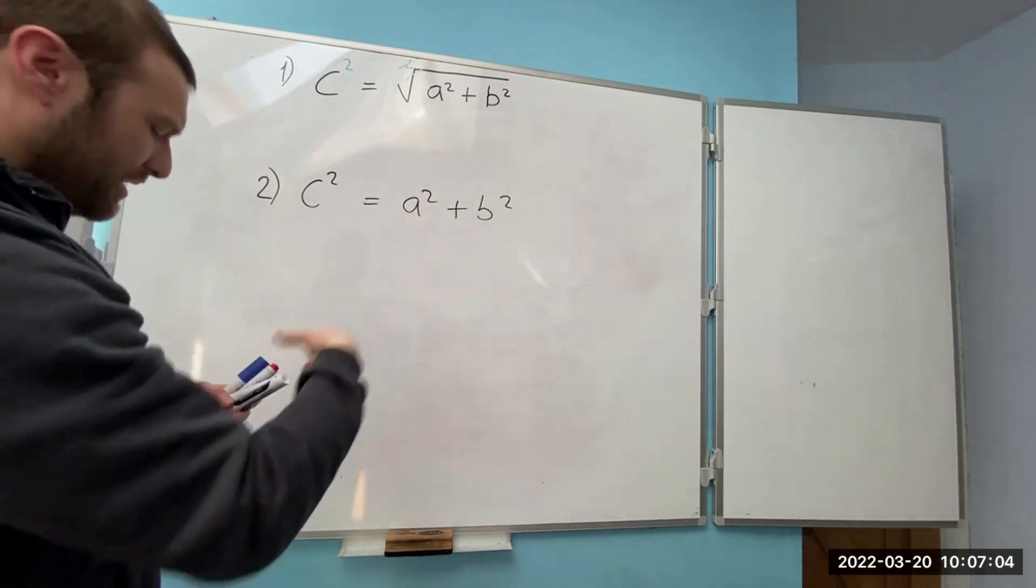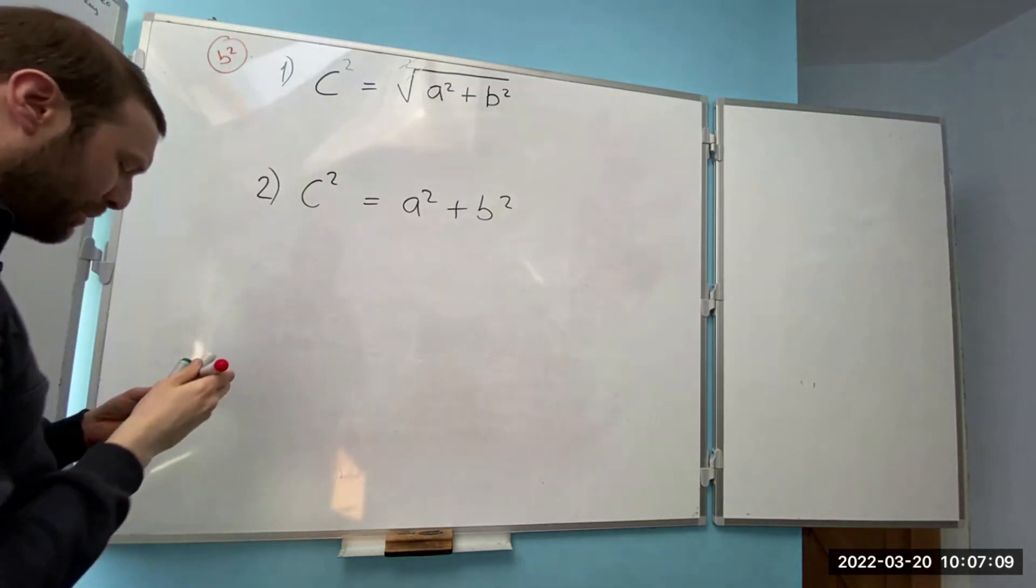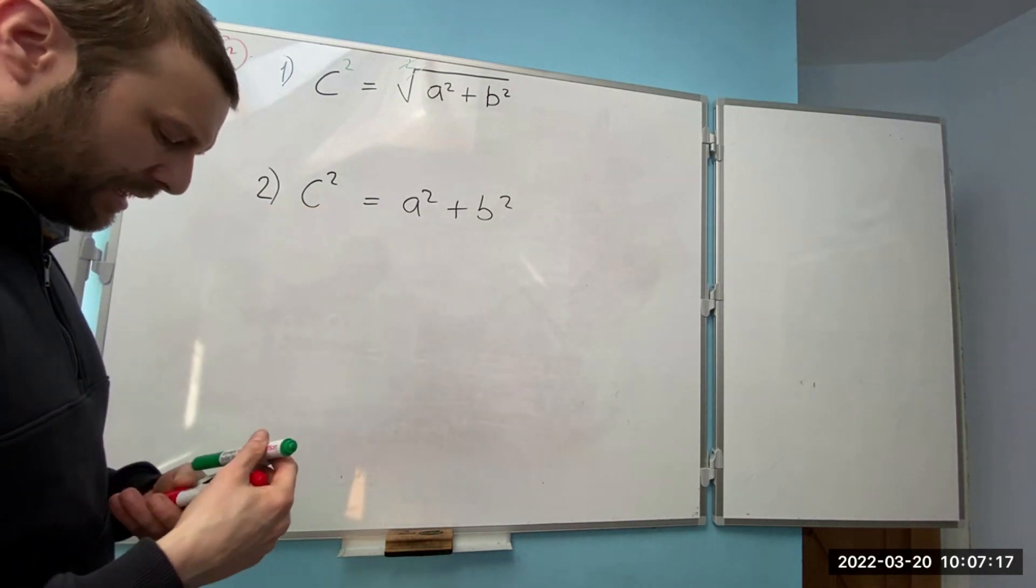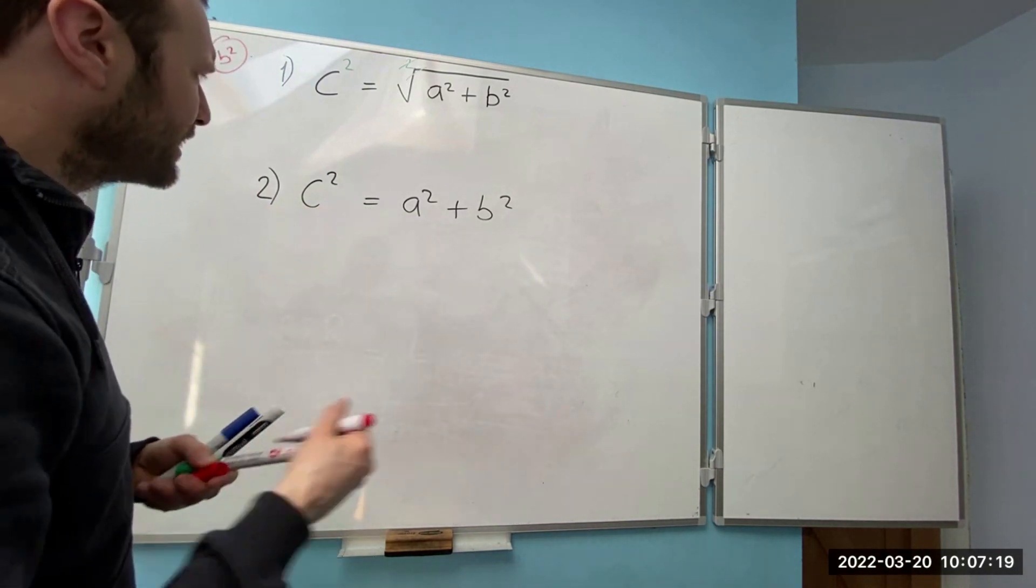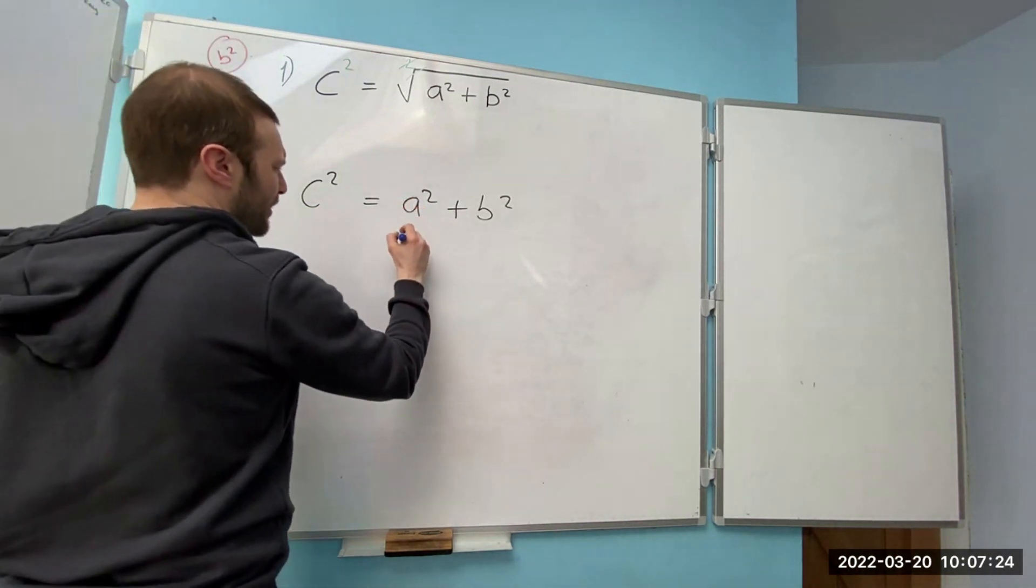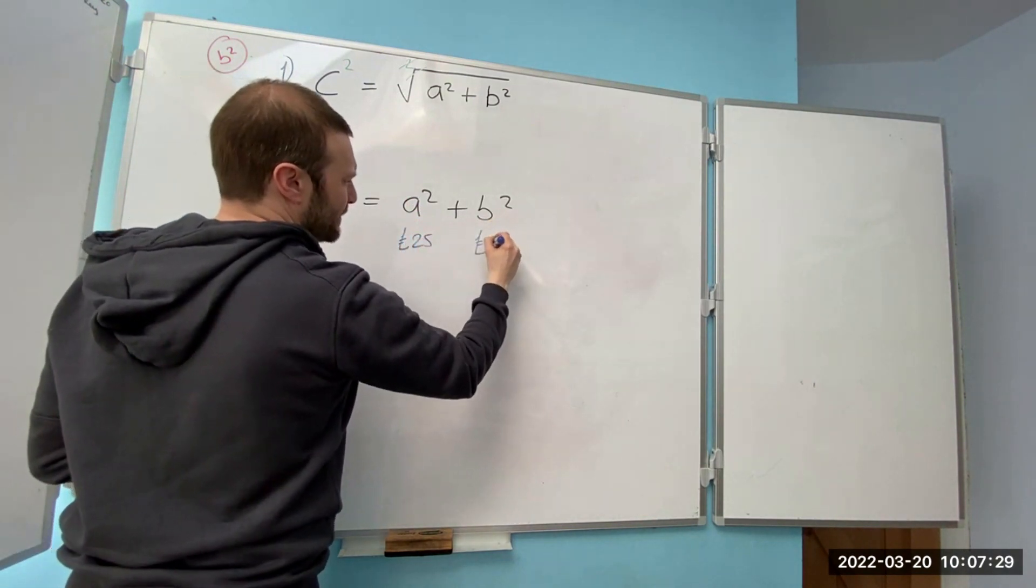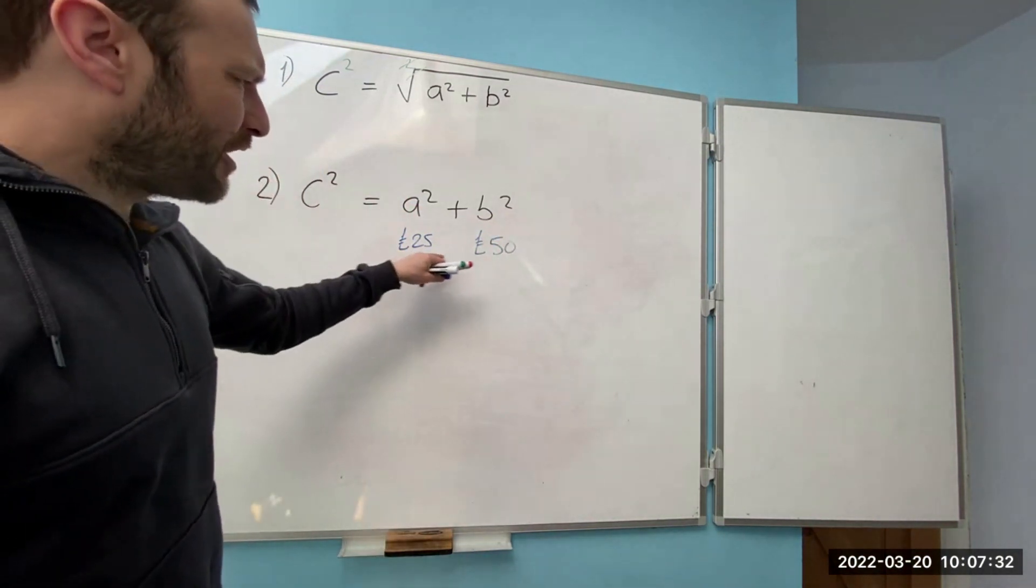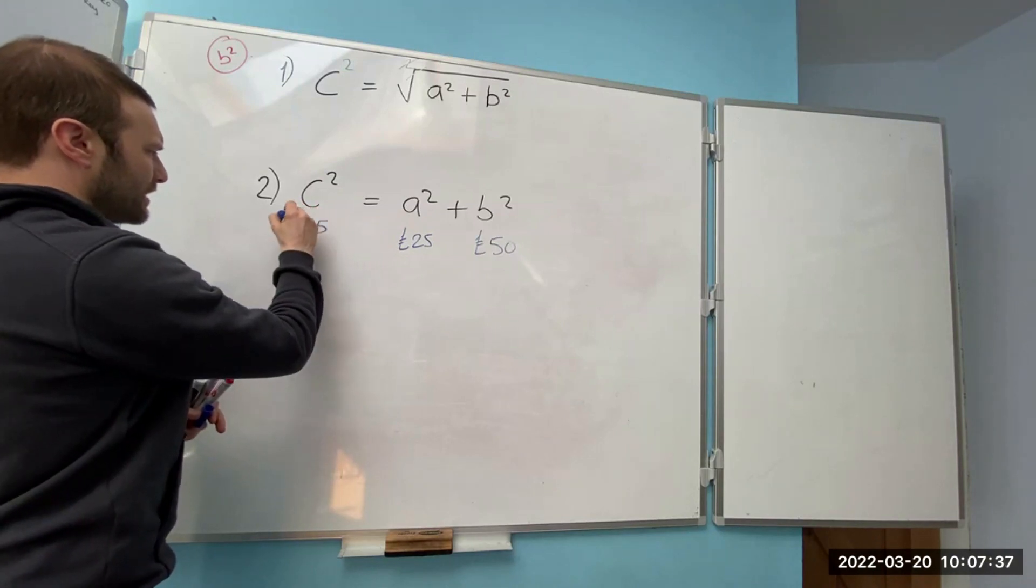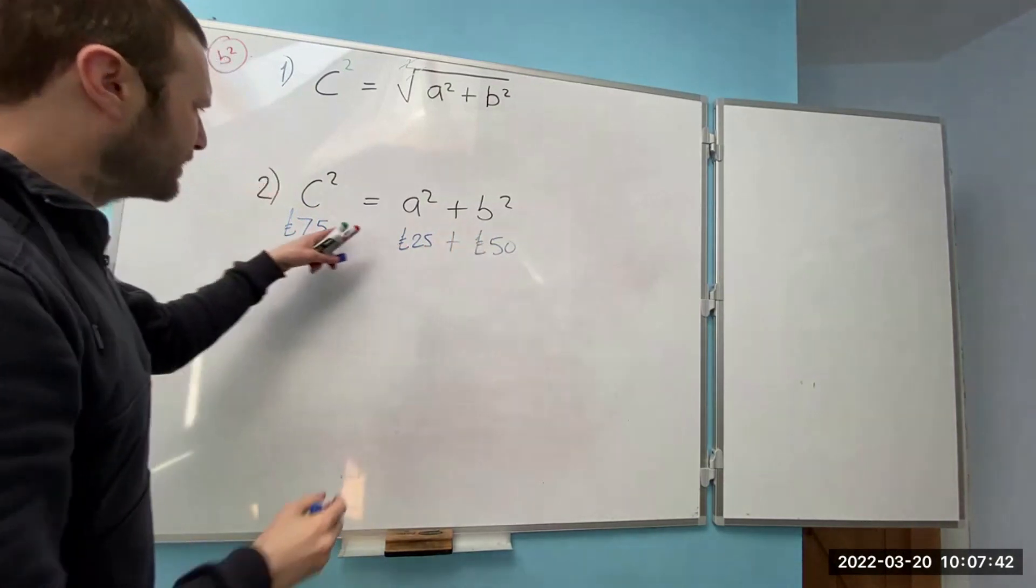Let's say that we're looking for b squared. So up here we're looking for b squared. Let's imagine that these have values, so let's say that a squared is 25 pounds, b squared is 50 pounds. Well 25 plus 50 has to equal 75 pounds because that plus that equals that.